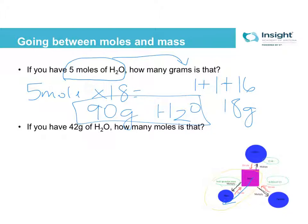Likewise, if I have a mass and I need to turn that into moles, that's going in this direction. So mass to moles, which means I'm going to divide. I'm going to take that 42 grams, that's our starting point, 42. And I'm going to divide by that molar mass, so 18. So 42 divided by 18 is 2.33 moles of water.